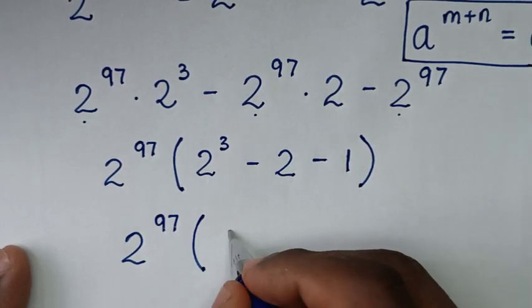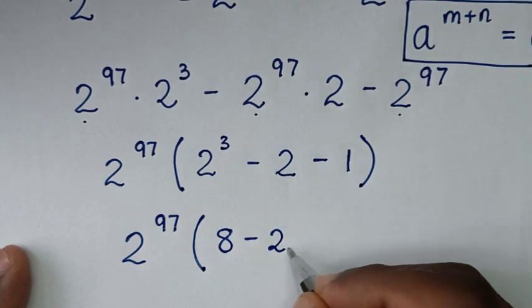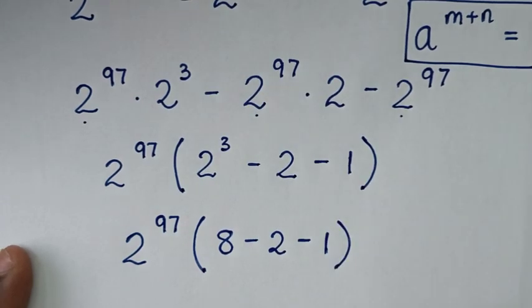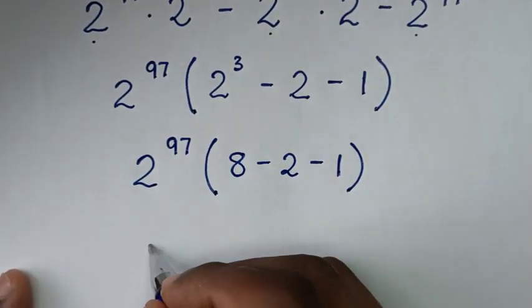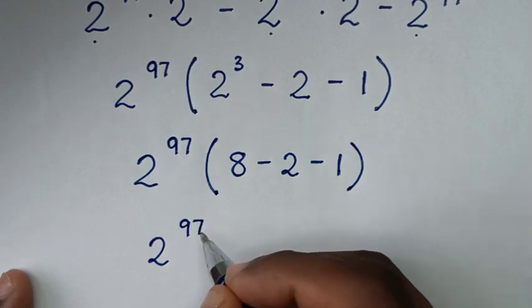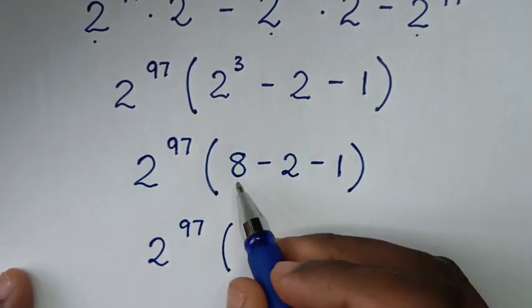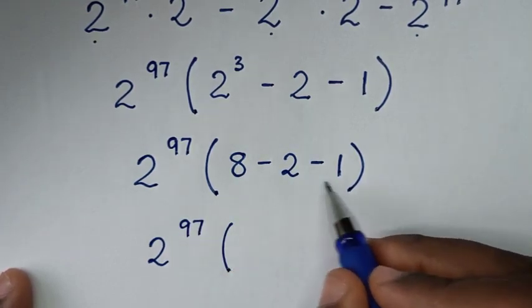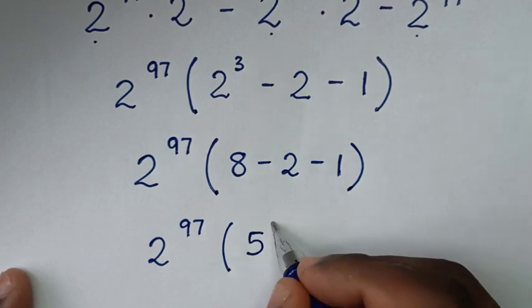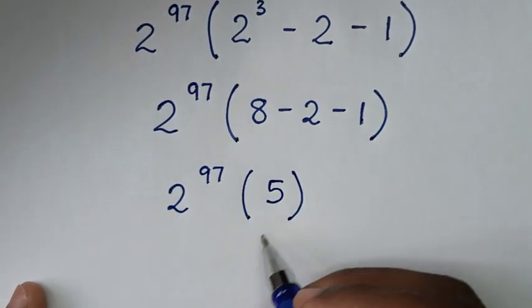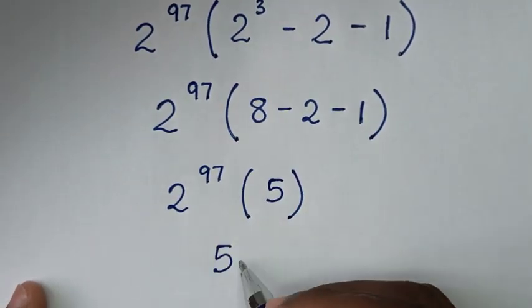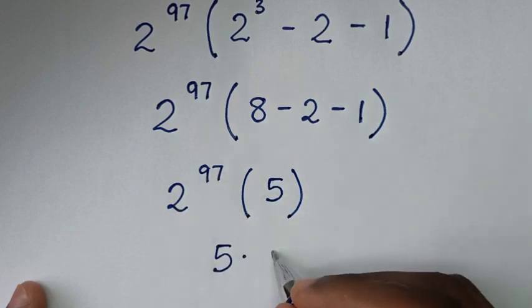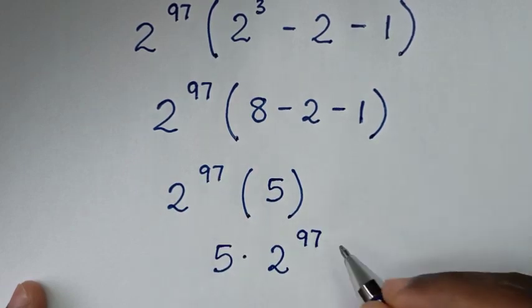2 power of 3 is 8 minus 2 minus 1 bracket. Then it will be 2 power of 97 then bracket. From 8 minus 2 is 6, 6 minus 1 is 5 bracket. So our final answer is 5 times 2 power of 97.